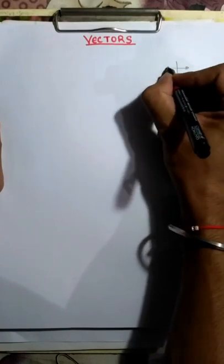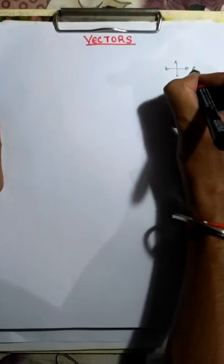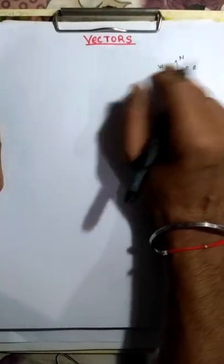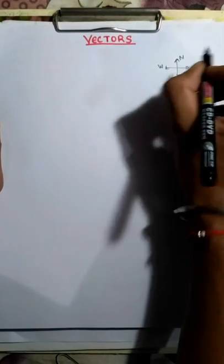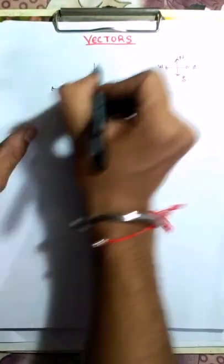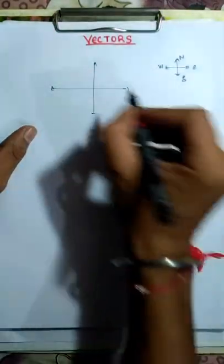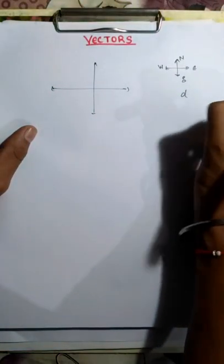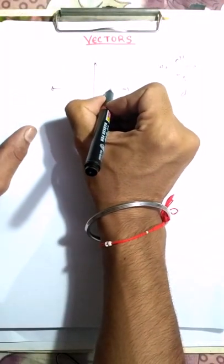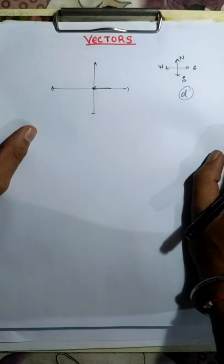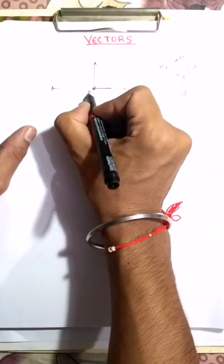Let's first mark the directions: this direction is east, this direction is west, upside is north, and this side is south. Now, let's say that you want to go to a place called Alpha, and you are moving towards that side.